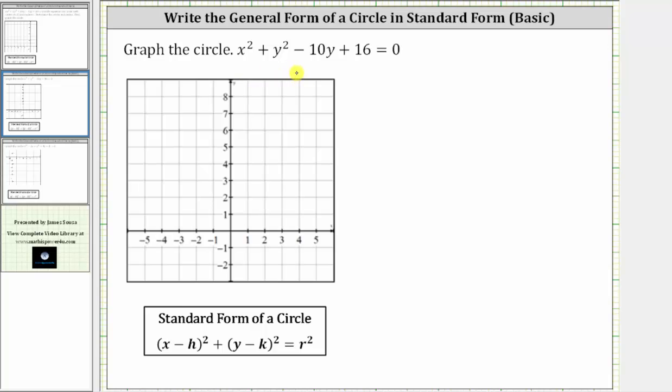We're asked to graph the circle x² + y² - 10y + 16 = 0. To graph the circle, we'll write the equation in standard form, which is the form shown here.